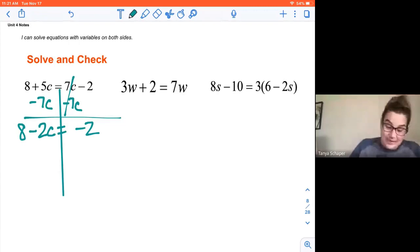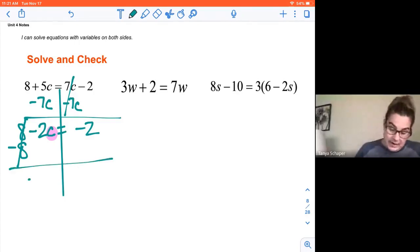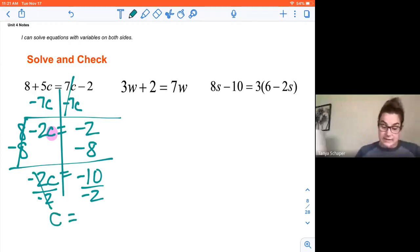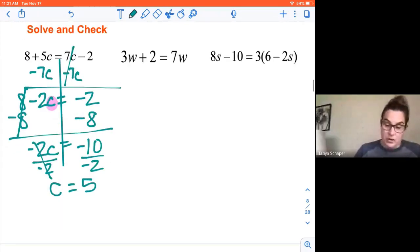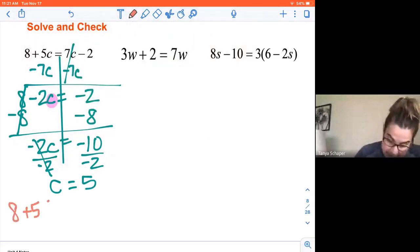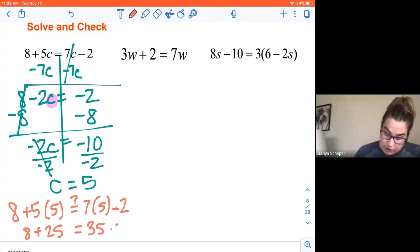Then this looks just like what we did in unit three. I want to work on getting that c by itself. So I need to peel away all the numbers that aren't by it. So I'm going to start by subtracting eight because eight minus eight is zero. I'm left with negative 2c equals negative 2 minus 8 is negative 10. And I undo multiplication by dividing by negative 2. A negative divided by a negative is positive. So c equals 5. Now to check it, I'm going to go put that back in. Is 8 plus 5 times 5 the same as 7 times 5 minus 2? Is 8 plus 25 the same as 35 minus 2? And the answer is yes. They're both 33. So I have the correct answer.